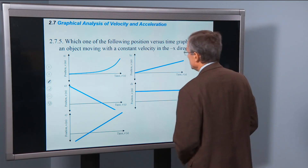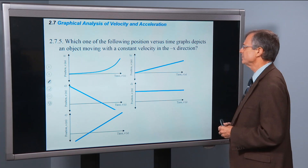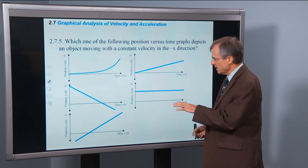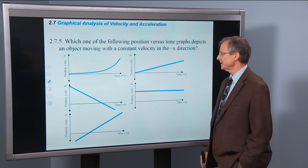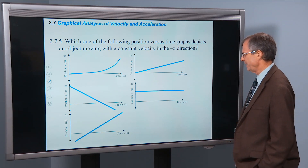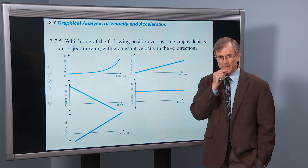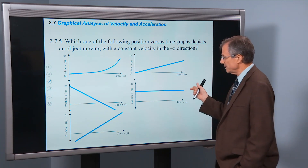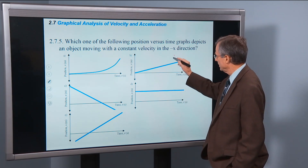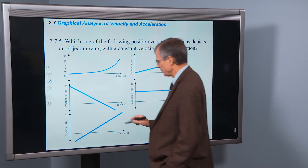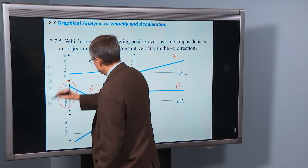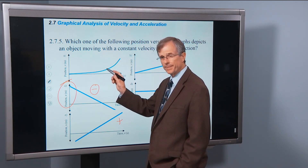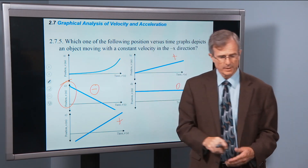Here's a clicker question: which of the following position versus time graphs depicts an object moving with a constant velocity in the negative x-direction? All of these are position versus time graphs. If we're going to have constant velocity in the negative x-direction, what's the slope going to be? Negative — it has to be negative. One graph has a positive slope, one has zero slope, another also has positive slope. The one we want has a negative slope, which gives a velocity in the negative x-direction. The last option has a positive but increasing slope, like the accelerating example we just finished.